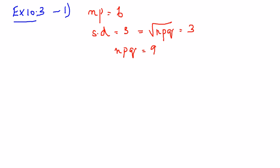But you see that the mean is equal to 6 and variance is equal to 9. But you know that in binomial distribution, always the mean is greater than variance. But here it is not.